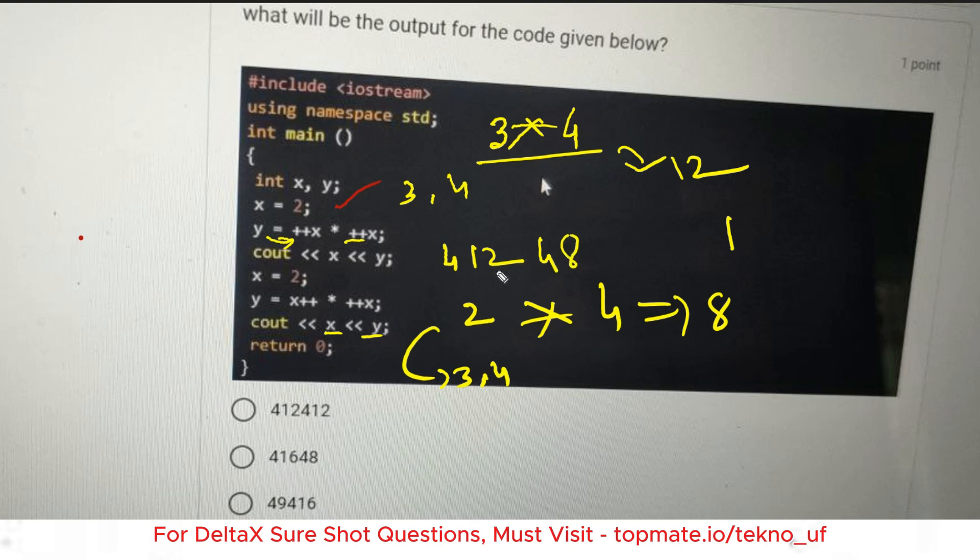So total value will be x y, that is 4 12, and again x y, that is 4 8. This should be the output, but there is a catch. As you can see in the options, there will be no options like this. 4 12 4 8, 4 12 4 12 is the wrong answer. 4 16 4 8, this can be a right answer.